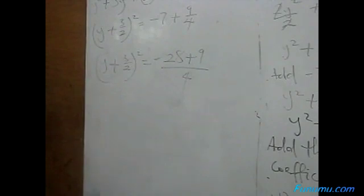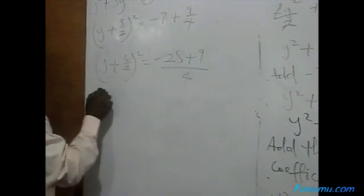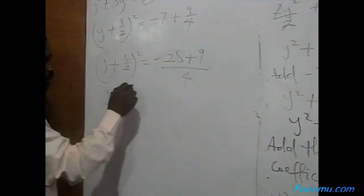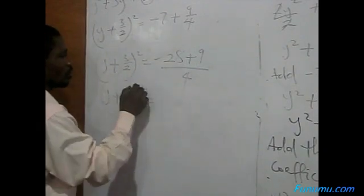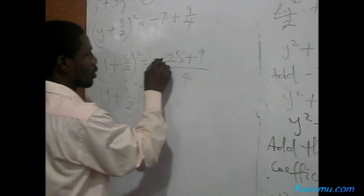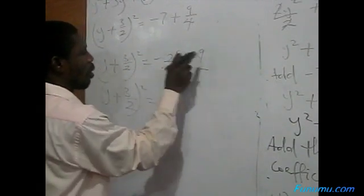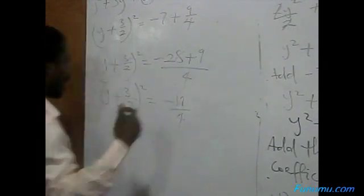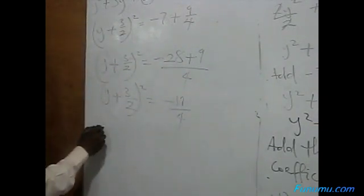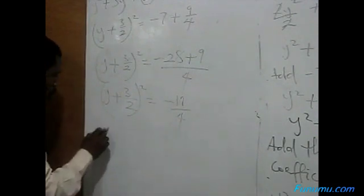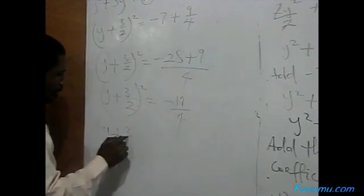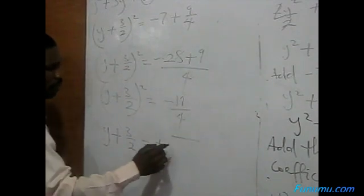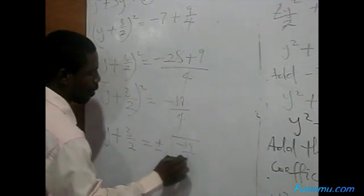Y plus 3 all over 2, all squared, equals minus 28 plus 9 is minus 19, so minus 19 all over 4. Taking the square root of both sides gives Y plus 3 all over 2 equal to plus or minus square root of minus 19 all over 4.